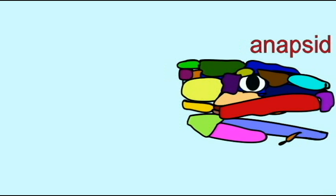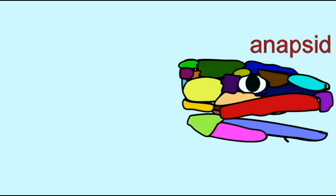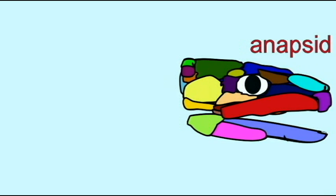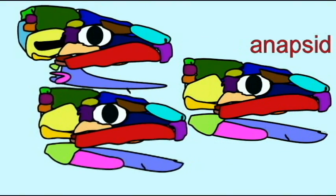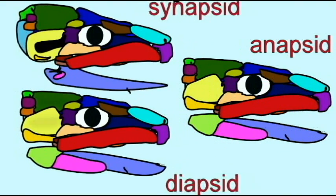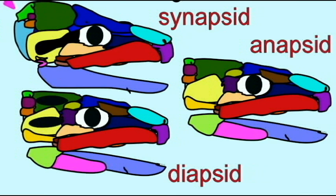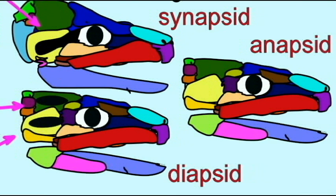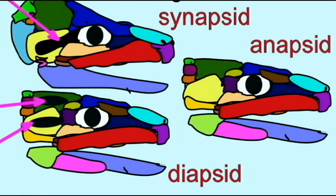Once reptiles evolve, they can be divided into the anapsid, diapsid, and synapsid groups based on whether they possess no openings in the temporal region of the skull — the anapsid condition — two openings in the temporal region of the skull — the diapsid condition — or one single opening in the temporal region of the skull — the synapsid condition.